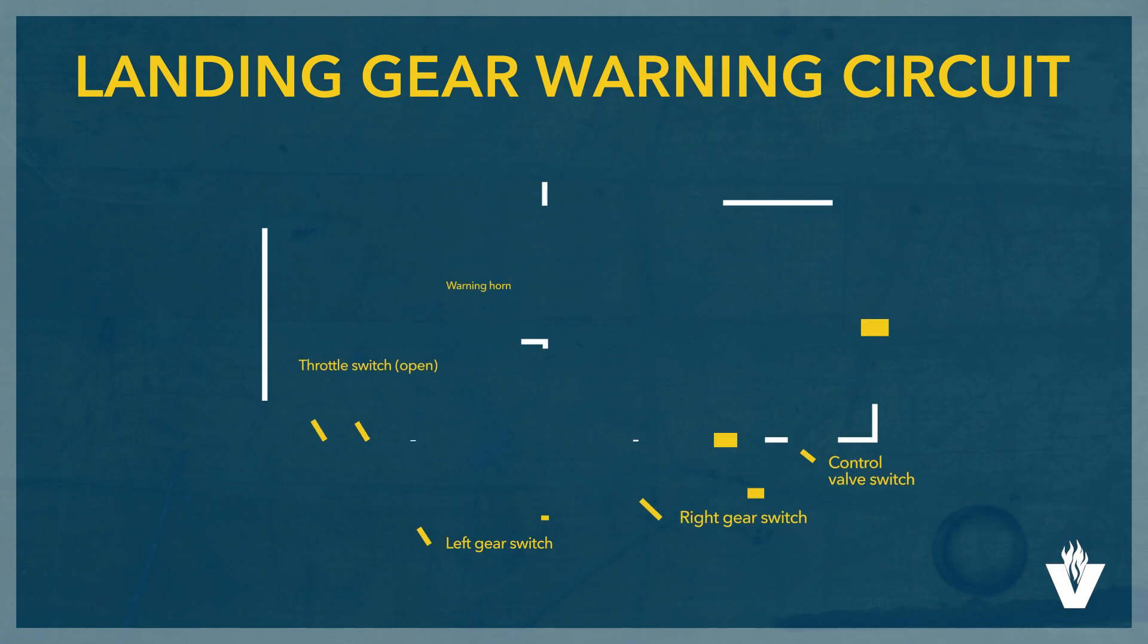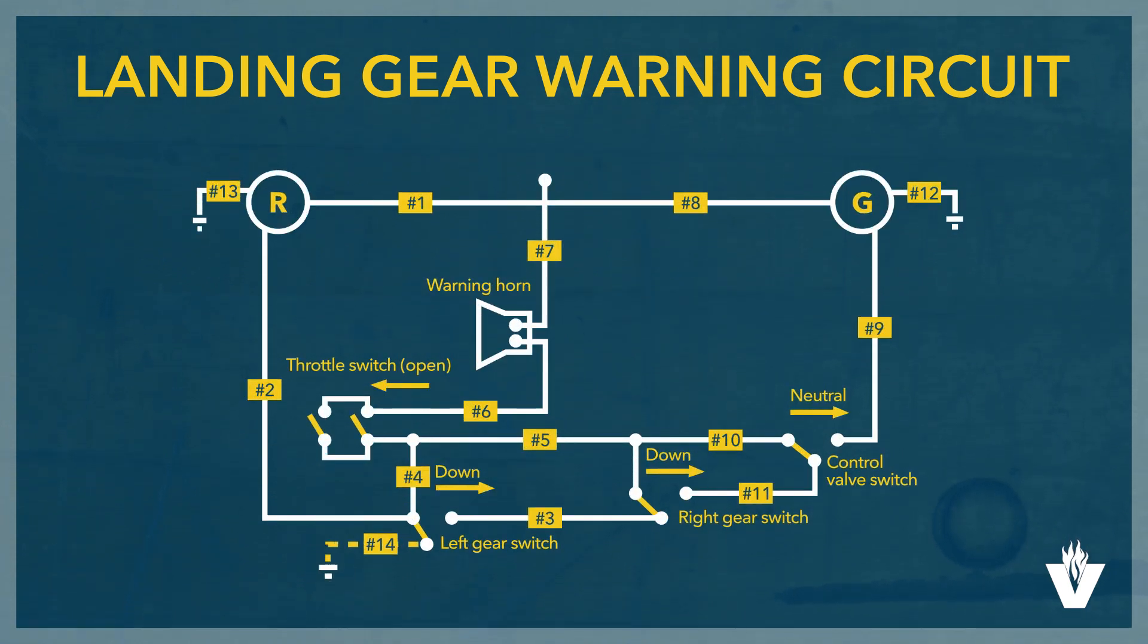This is the schematic of the electrical wiring of the landing gear warning circuit. It tells you what components are electrically connected to what other components, but it does not make clear what the circuit actually does. We see that all three landing gear are down and locked, the green light comes on.